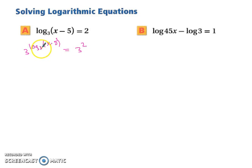Well, 3 to the log base 3, these are going to cancel each other out, simply leaving you with x minus 5 equals 3 squared, which is 9. So therefore, x has to equal 14.